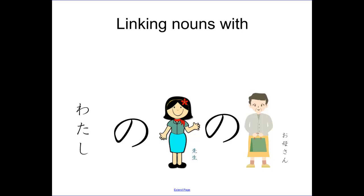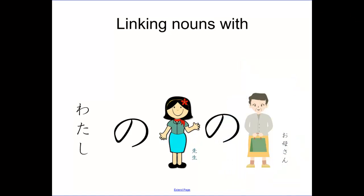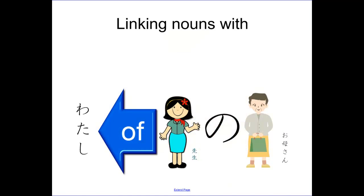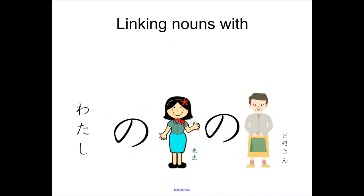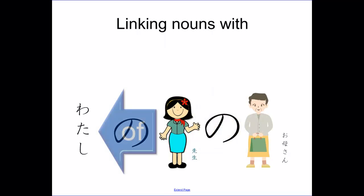But if we use the other system, it's going to be a lot easier to understand. Start with the keyword on the right, okaasan, mother. Work backwards, translating particle NO as of. And we get mother of teacher of I. If we use me instead of I, it's even clearer. Mother of teacher of me. In other words, my teacher's mother.